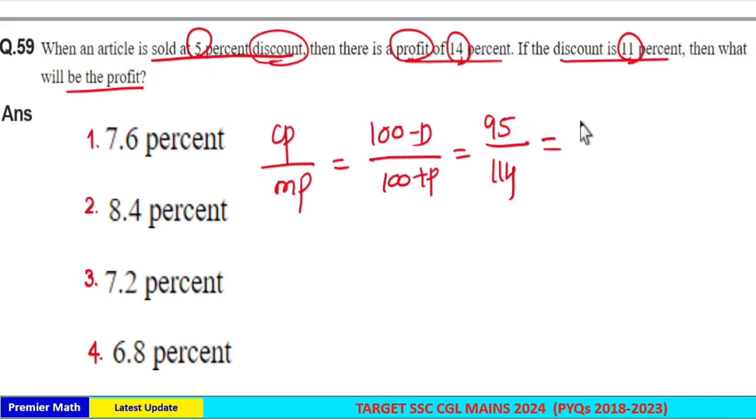when you have 11% discount, 100 minus 11, 89 rupees is the course price and we don't know the profit for that.